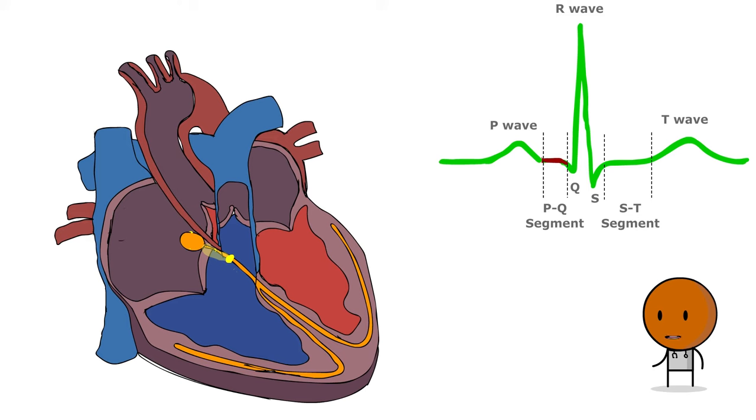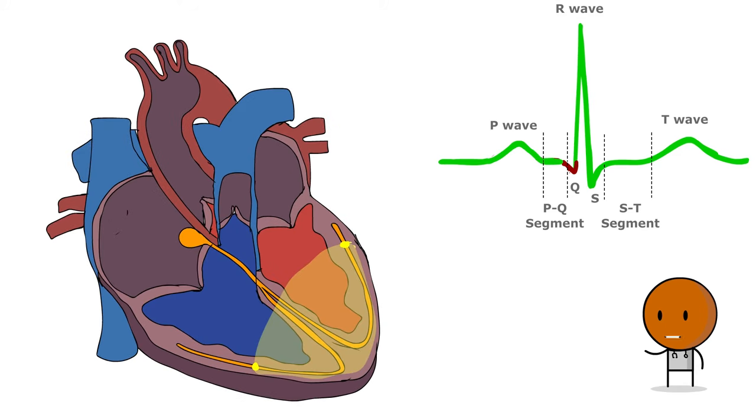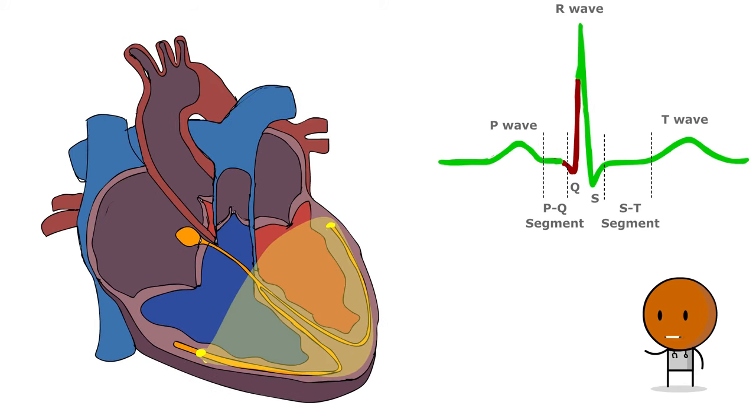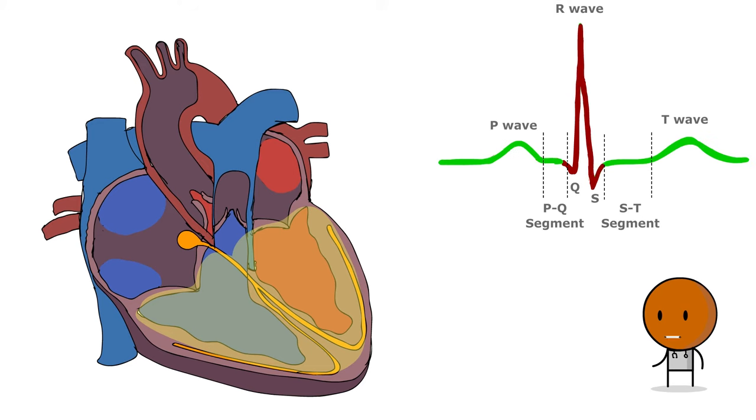The QRS complex highlights the AV node's activation and the ventricle's depolarization, with each wave corresponding to different portions of the ventricles. Concurrently, the atria repolarize, but this signal is masked by the dominant QRS complex.